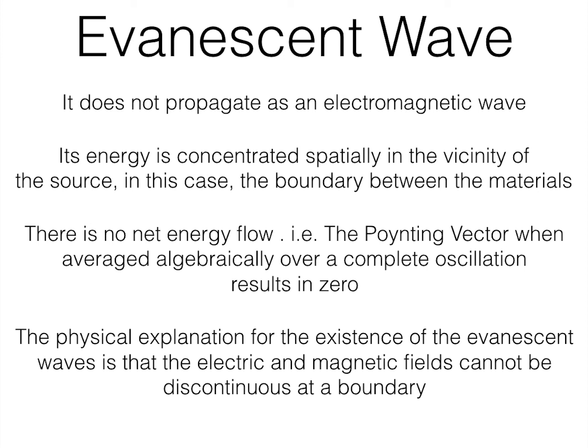The physical explanation for the existence is that electric and or magnetic fields cannot be discontinuous at a boundary, which means that when a ray of light is incident on a boundary and it reflects back, the electric field on the left of the boundary has to be equal to the electric field on the right of the boundary, which gives rise to evanescent waves.